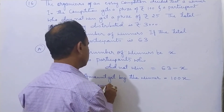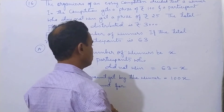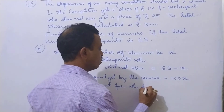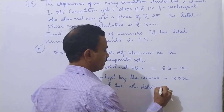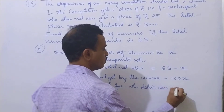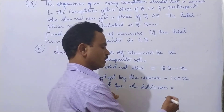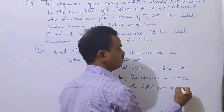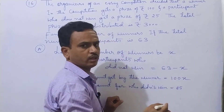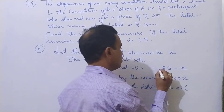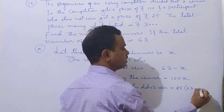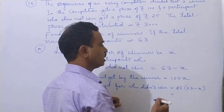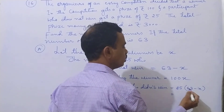Amount for those who did not win: they get Rs 25 each. The number of participants who did not win is 63 minus x. So we multiply 25 into (63 minus x), which gives 25 into 63 minus 25x.